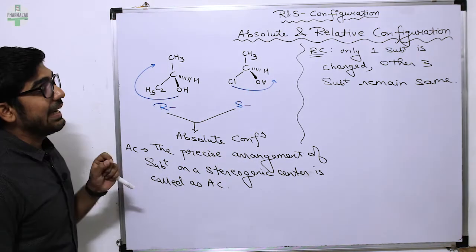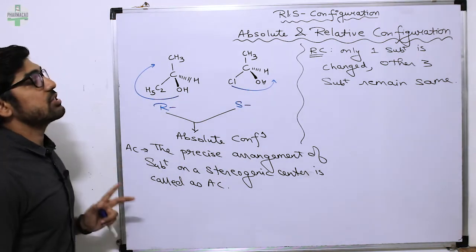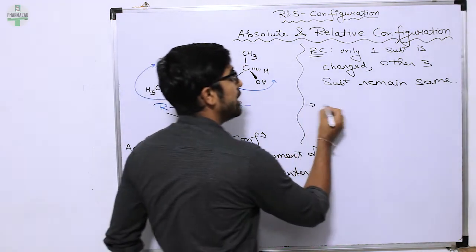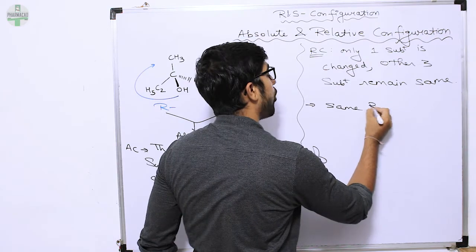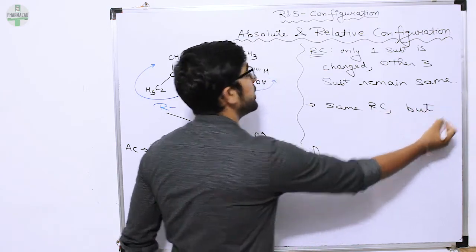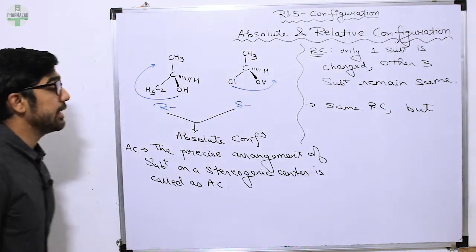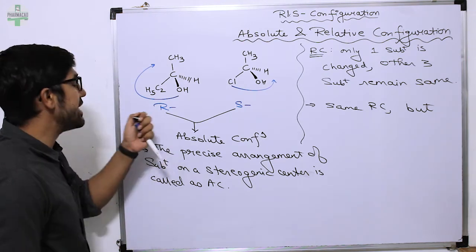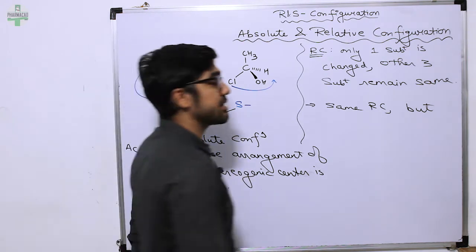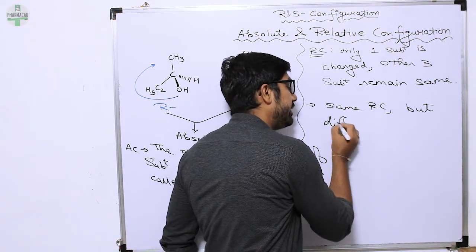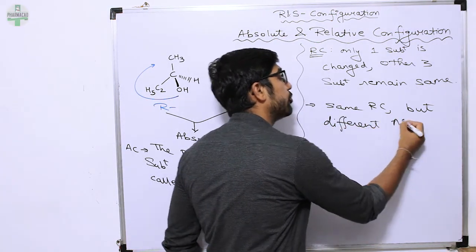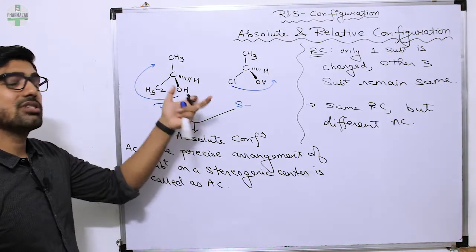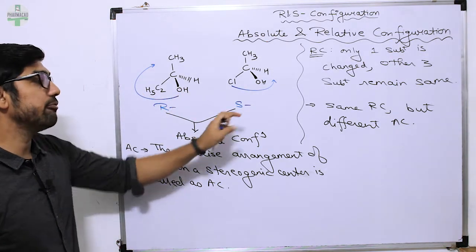Their relative configuration is the same because three substituents remain the same. But the absolute configuration is different - R and S, different absolute configurations. Relative configuration can be the same, but absolute configuration is different.